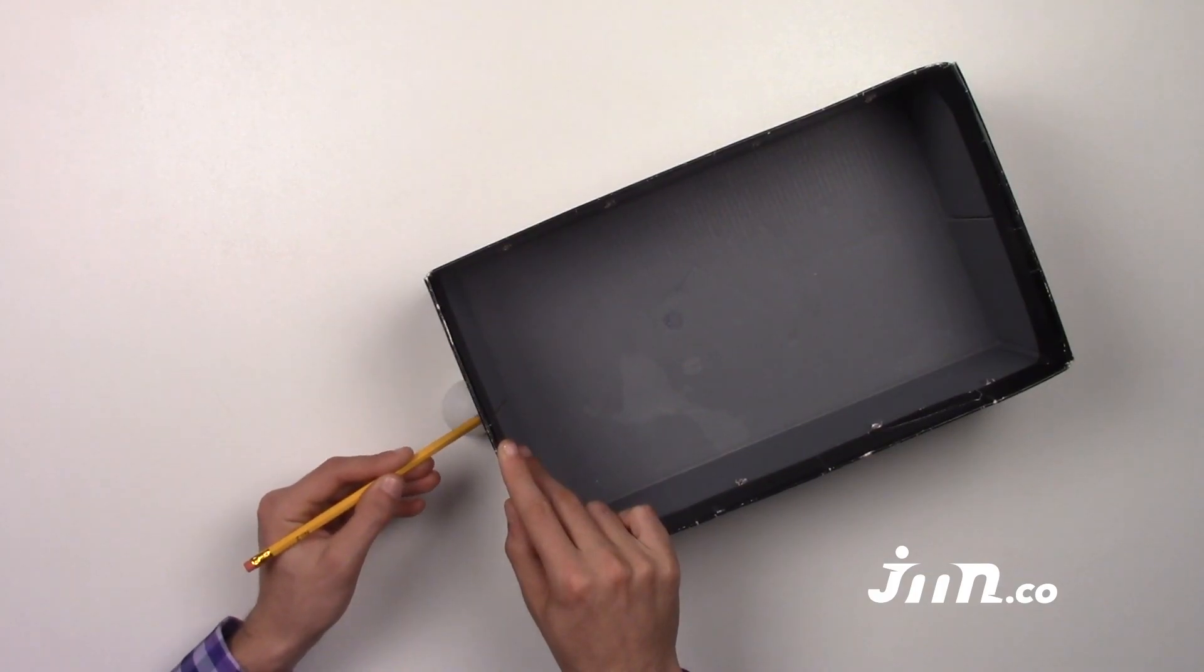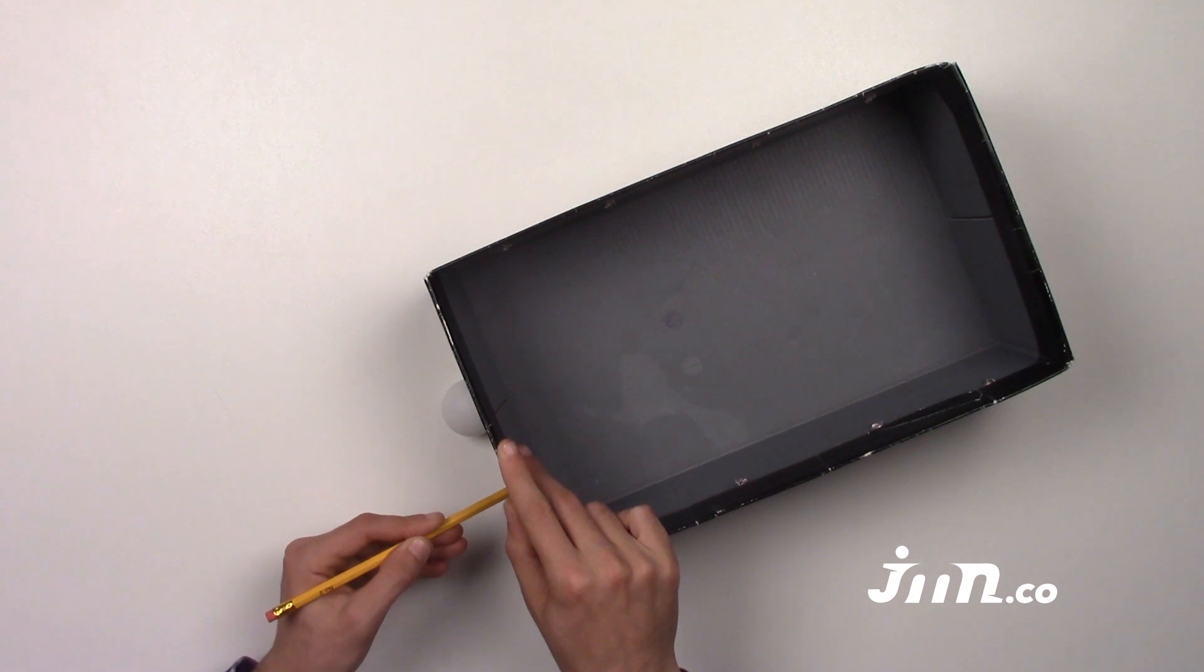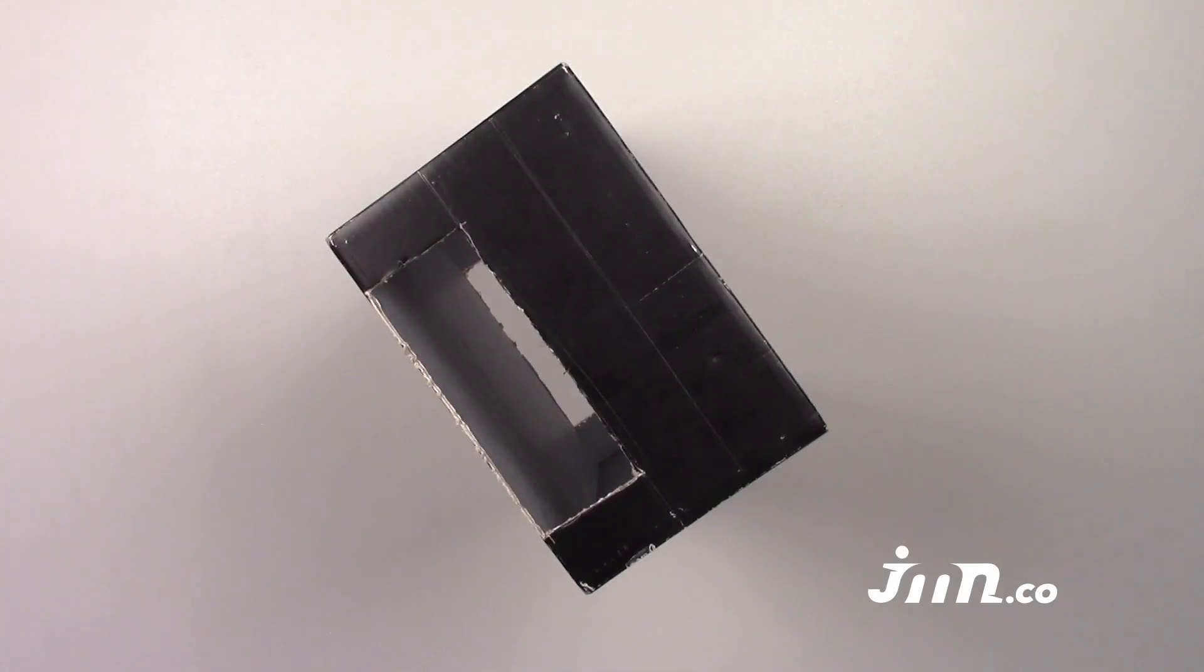Step 7: Place the ping pong ball where the goals will be. Make a line a bit above the height of the ball and two lines for the sides of the goals, and ask an adult to cut out the opening.